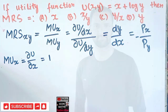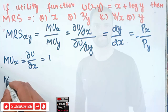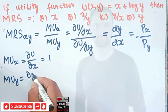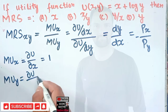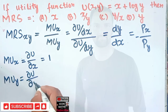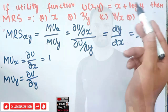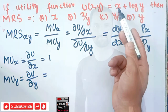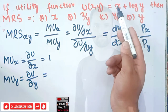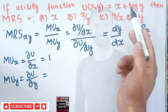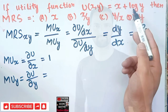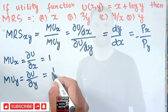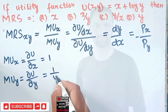Similarly, marginal utility of y equals du/dy, the partial derivative with respect to y. Since no y is involved in the first term, its derivative is 0. The derivative of log y is equal to 1 over y, so marginal utility of y equals 1 over y.